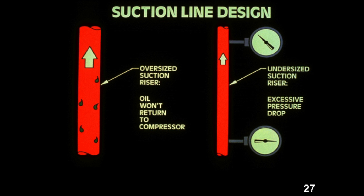For example, if a bigger suction line than actually designed is used, oil won't return to the compressor, which will lead to low lubrication. If a suction line smaller than the actual design is used, then pressure drop will be greater and will also result in low lubrication in the compressor.